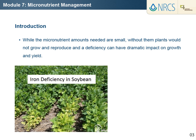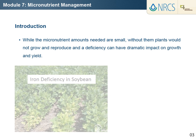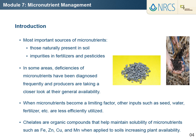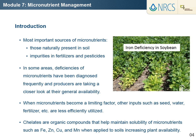Even though the needed micronutrient amounts are small, without them, plants would not grow and reproduce. Traditionally, the main sources of micronutrients for crop growth have been those naturally present in soil and amounts added as impurities in fertilizers and pesticides. Specific soil and related crop situations, however, can result in deficiency of one or more micronutrients and potentially serious limitation to crop production.